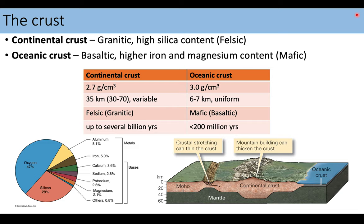That is important when we get to talking about the crust — the outermost, least dense portion of our earth. There are two different types: continental crust and oceanic crust. Continental crust is granitic, made up of a significant amount of granite with a very high silica content, which means it is felsic. We'll go over felsic and mafic when we get into rocks and minerals. The oceanic crust is basaltic, with a much higher iron and magnesium content — this is called mafic. Oceanic crust is much more dense.